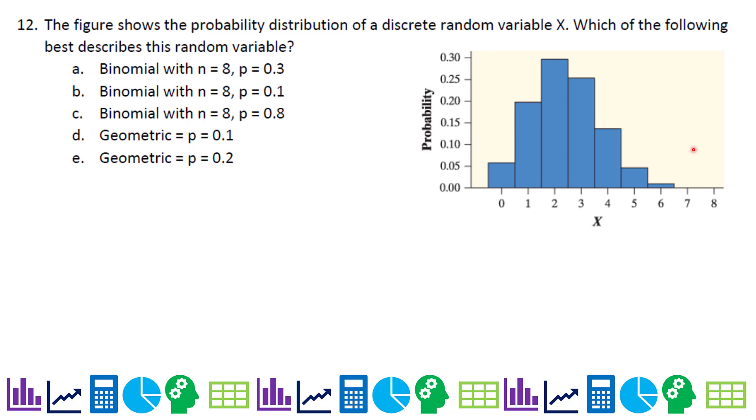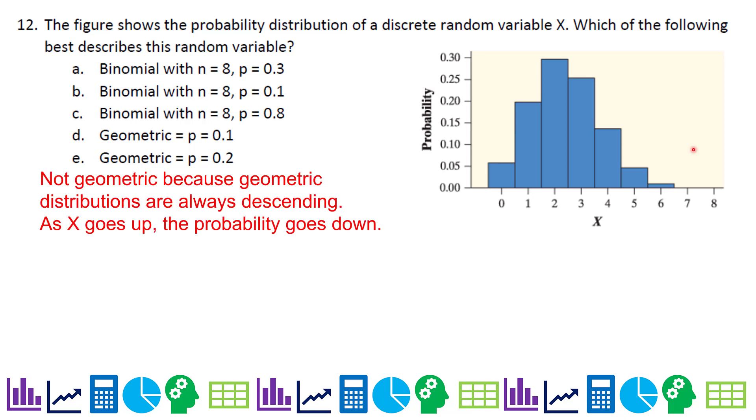On to number 12. The figure shows the probability distribution of a discrete random variable X. Which of the following best describes this random variable? Well, first of all, this is not geometric. Geometric actually, if you think about it, let's say the probability is 0.1 on geometric. So the probability of failure is 0.9. If you get success on your first try, you start out with 0.1. Let's say you fail in the first try and then you succeed on the second one. It's 0.9 times 0.1, which is 0.09, which is smaller than 0.1. If you fail twice and then succeed, you get 0.9 times 0.9, 0.81 times 0.1. So it's 0.081. So it's always descending. Geometric distributions look like exponentials that are just going down to the right.